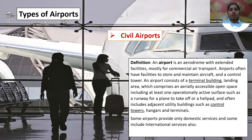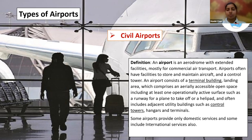Now we'll move on to the types of airports. Airports can be classified into different categories. The first is civil airports — airports that provide facilities for commercial use only. This could include transportation of passengers from one place to another or transportation of cargo. Civil airports often have facilities to store and maintain aircraft and a control tower where air traffic control operates.